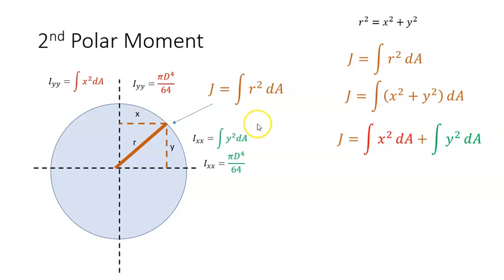And from the tables, we know that that's Pi D to the power of 4 over 64. And this is also Pi D to the power of 4 over 64. So if I have one sixty-fourth of something and I add another sixty-fourth, then I get one thirty-second of something. So this would be the second polar moment of a solid shaft. And it's really just the resistance of the shaft to torsional loads.